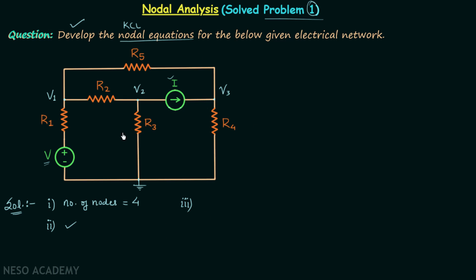In this particular question we need to perform the nodal analysis only up to step number three. Step number four is not required because in step number four we solve the KCL equations. Here we only need to obtain or develop the nodal equations, so this step is our last step. We develop the KCL equations for non-reference nodes, and here we are having one, two, and three non-reference nodes. Let's begin with the first non-reference node.